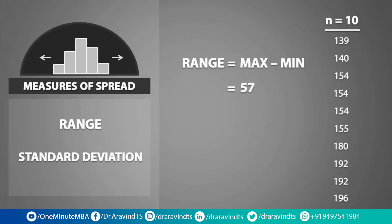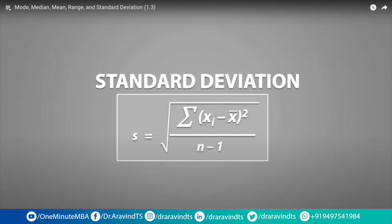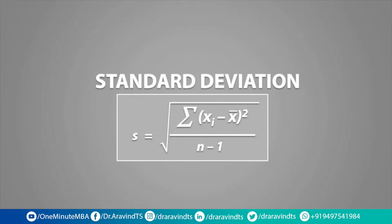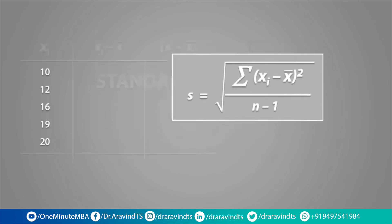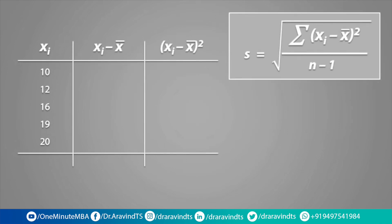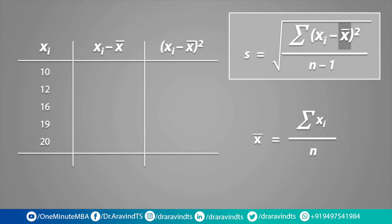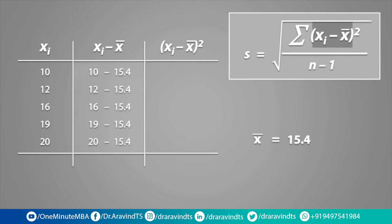The standard deviation is computed using this formula. The formula looks a little complicated, but the calculation is simple. We will calculate the standard deviation for the following data set. I will create a table to help with my calculations — this table corresponds to the numerator of the formula. Since x-bar is contained within the formula, we should calculate this first; you should find that the mean is equal to 15.4. The formula says we need to subtract each value from x-bar: 10 minus 15.4 is negative 5.4, 12 minus 15.4 is negative 3.4, 16 minus 15.4 is 0.6, and so on.